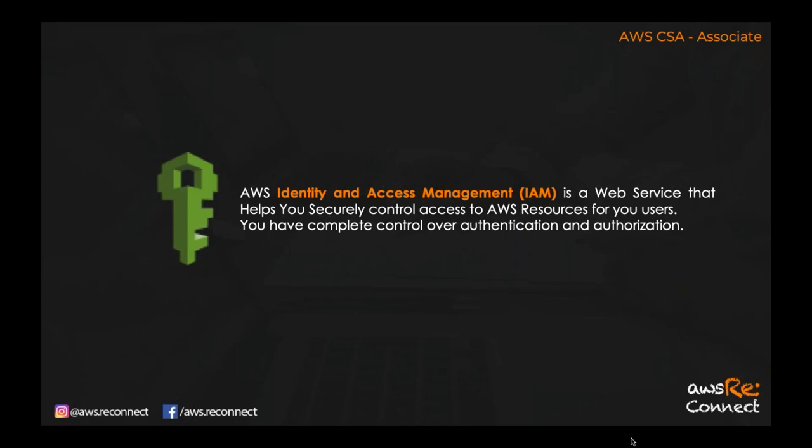Usually, what happens is we hardcode all the credentials in our code, and that code connects to third-party services. But in the case of AWS, we avoid that approach. We use something like an AWS Role, which is a third-party identity that gives authorization from one AWS service to another. For example, if an EC2 instance wants to access S3 storage, you attach a role that allows EC2 to use S3. Only then can the EC2 instance communicate with S3; otherwise, communication between these two services is denied. All AWS services need roles to talk to other AWS services.